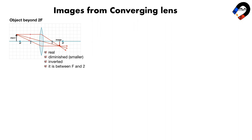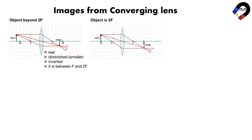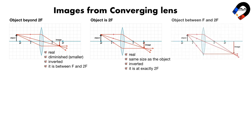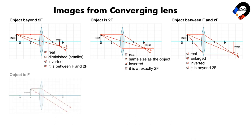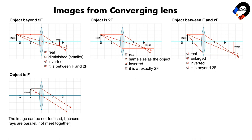When an object is at 2f, the image is real, the same size as the object, inverted, and located at exactly 2f. When an object is between 2f and f, the image is beyond 2f. When an object is at f, the image cannot be focused because the rays are parallel and do not meet.